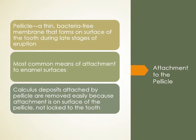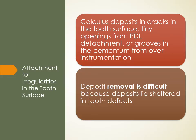When calculus attaches to the pellicle — a thin, bacteria-free membrane that forms on the tooth surface during late eruption stages — it is most commonly on enamel surfaces. These deposits are removed easily because the attachment is on the surface of the pellicle and not locked onto the tooth; when scaling, the piece just pops right off. When calculus attaches to irregularities in the tooth structure — cracks, tiny openings from PDL detachment, or grooves from cementum over-instrumentation — it becomes very difficult to remove.